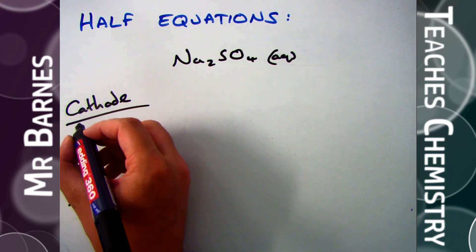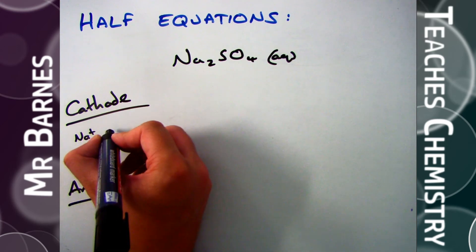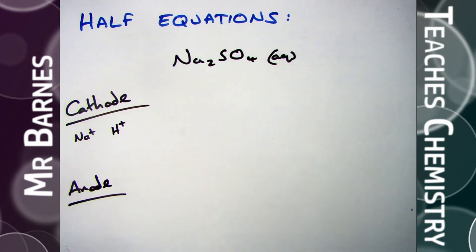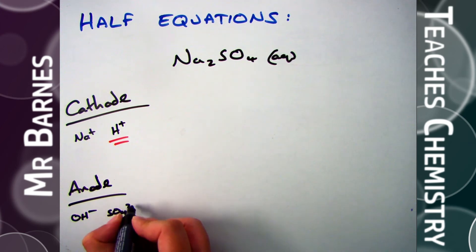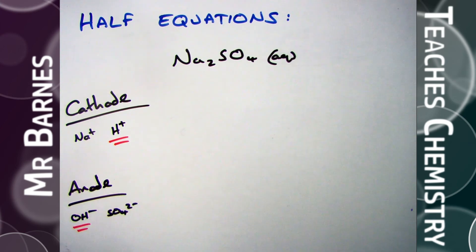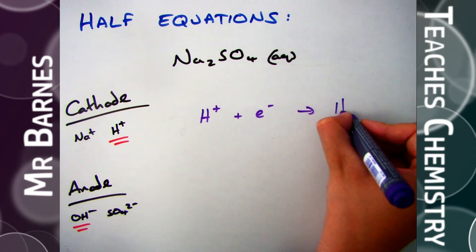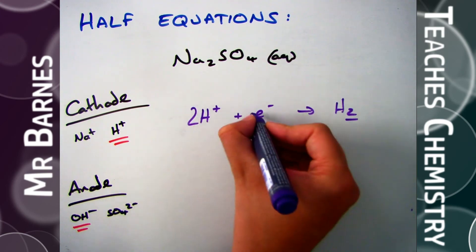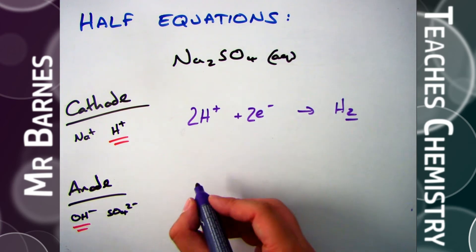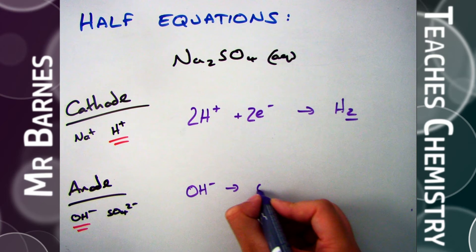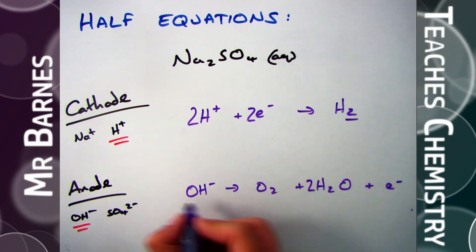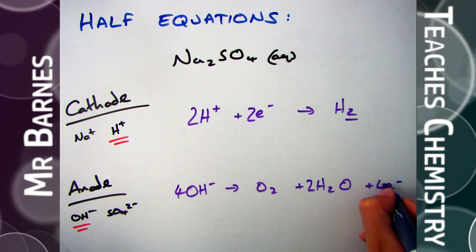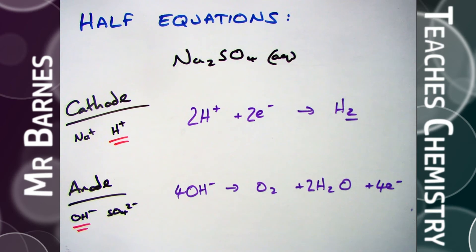Looking at sodium sulfate — you're starting to see the pattern. We use the least reactive option, which in this case is hydrogen. At the anode there's no halide, so it's OH⁻. Half equations: 2H⁺ + 2e⁻ → H₂, balancing to two hydrogens and therefore two electrons. At the anode I have OH⁻ going to O₂ and H₂O. Balancing gives 4OH⁻ → O₂ + 2H₂O + 4e⁻.